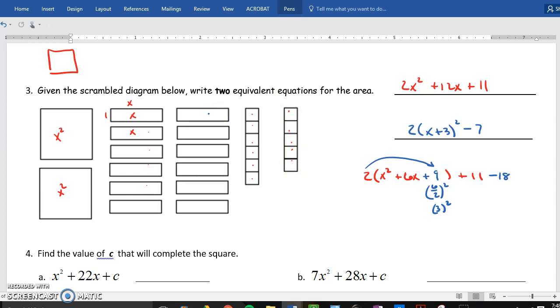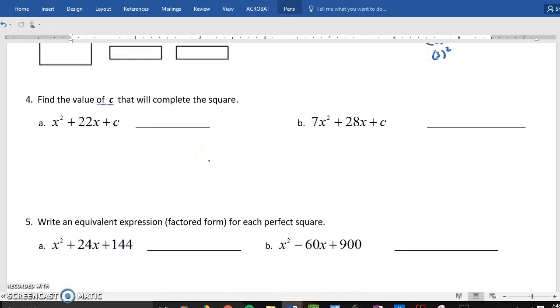Example 4. How do we find c? Remember, if there's no number in front of x squared, c is basically half of b all squared. So, if b is 22, what is half of that? 11. And 11 squared is 121. So, all you have to do is take half of b and square it.